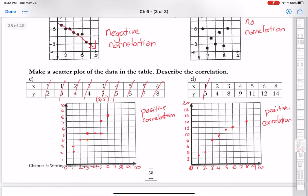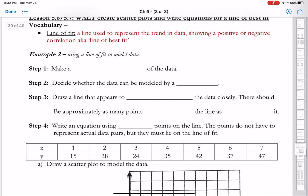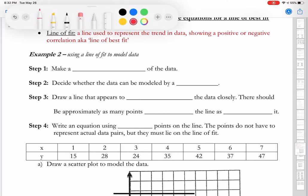All right. Let's take a look at packet page 39. So now, a line of fit. It is a line used to represent the trend in data showing a positive or negative correlation, a.k.a. line of best fit. So even when we have a scatter plot and the information is all over the place, we can actually still create a line and find an equation for it because we can try and see if we can best describe the data.